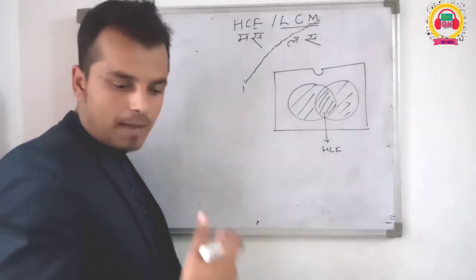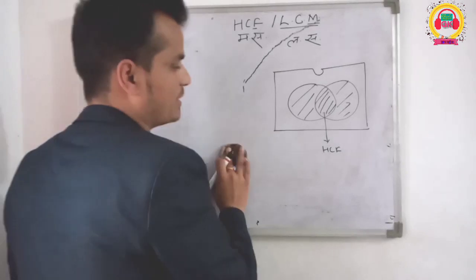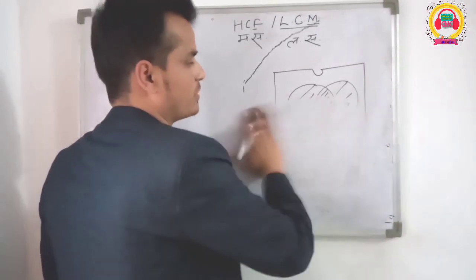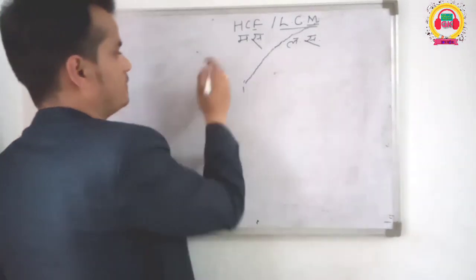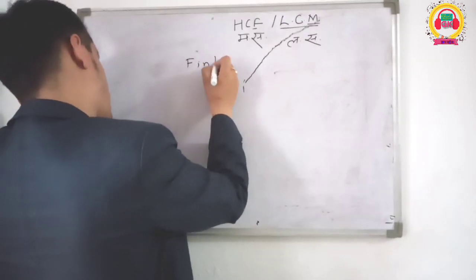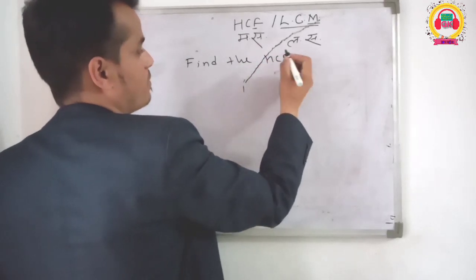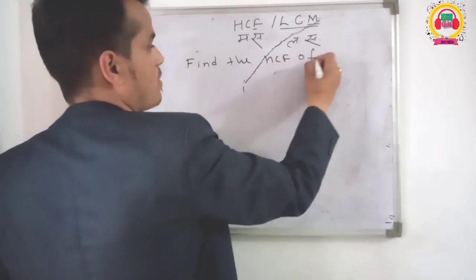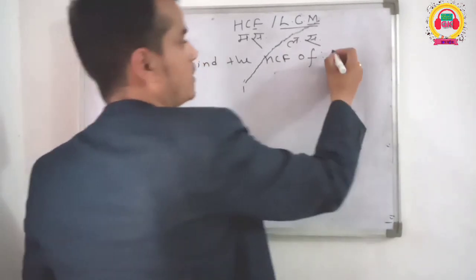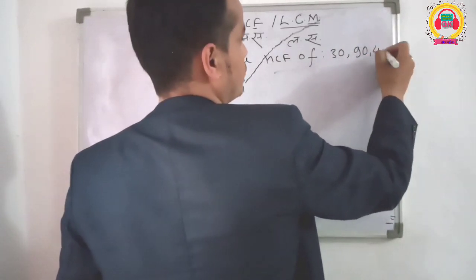So I am going to show you how this works. Find the HCF of 30, 90, and 45.